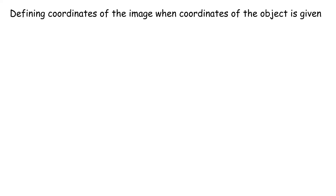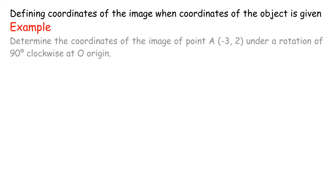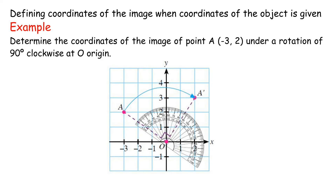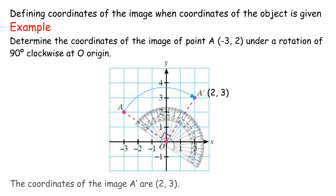Determining the coordinates of the image when coordinates of the object are given. Example: Determine the coordinates of the image of point A(-3, 2) under a rotation of 90 degrees clockwise at origin O. Step 1: Join line OA. Step 2: Rotate line OA by 90 degrees clockwise at origin O using a protractor. The coordinates of image A' are (2, 3).